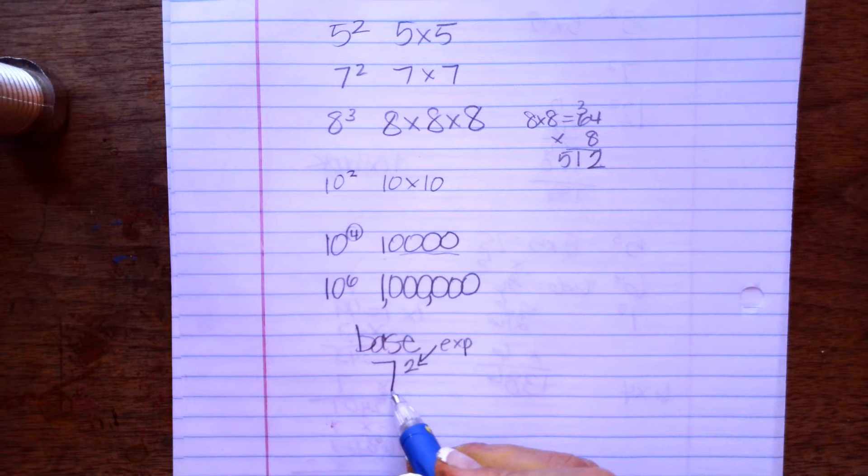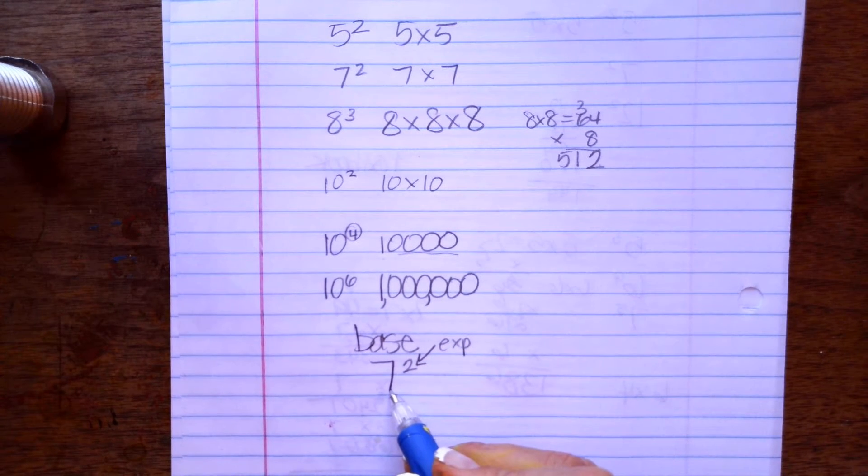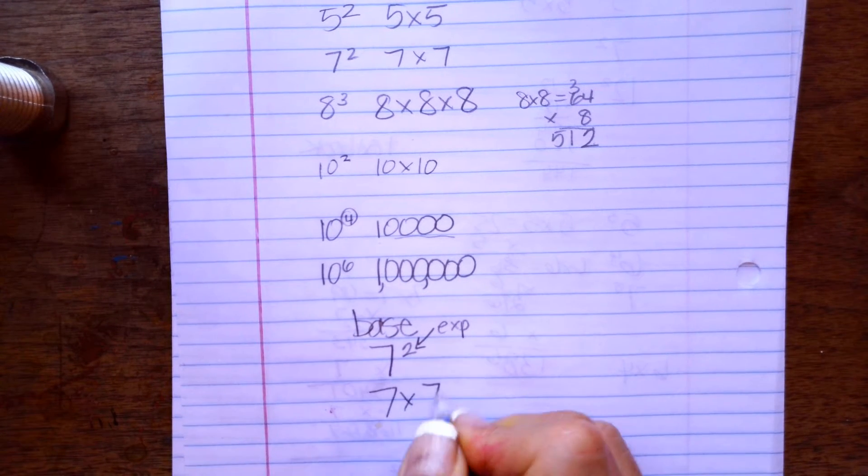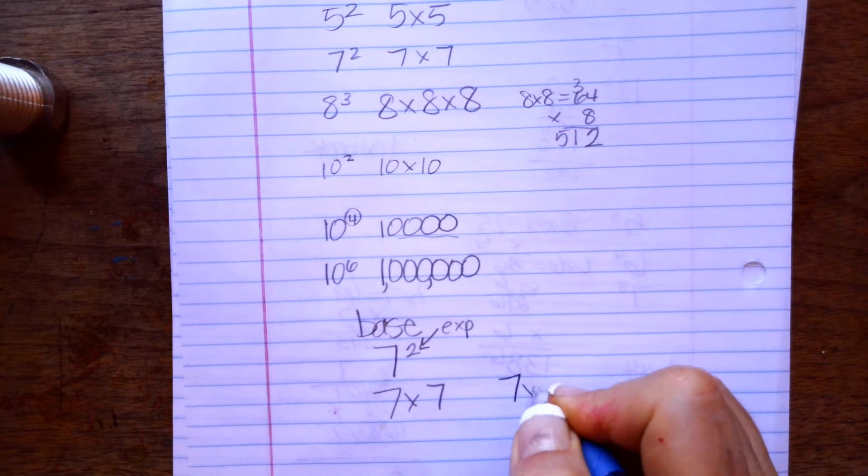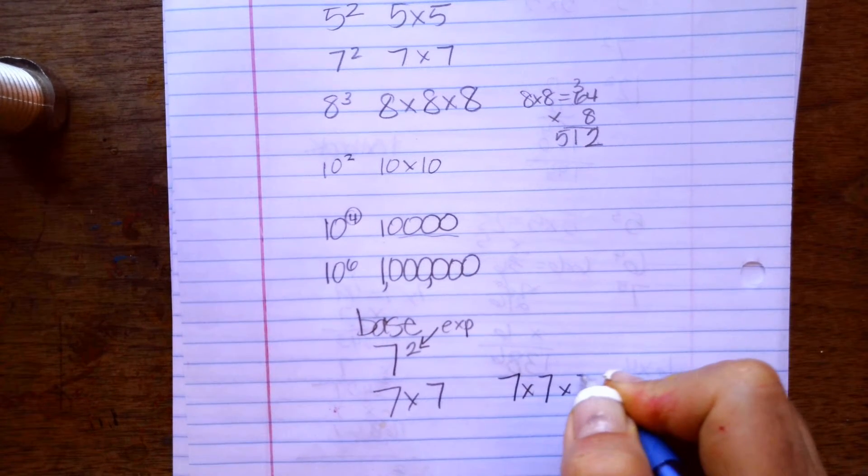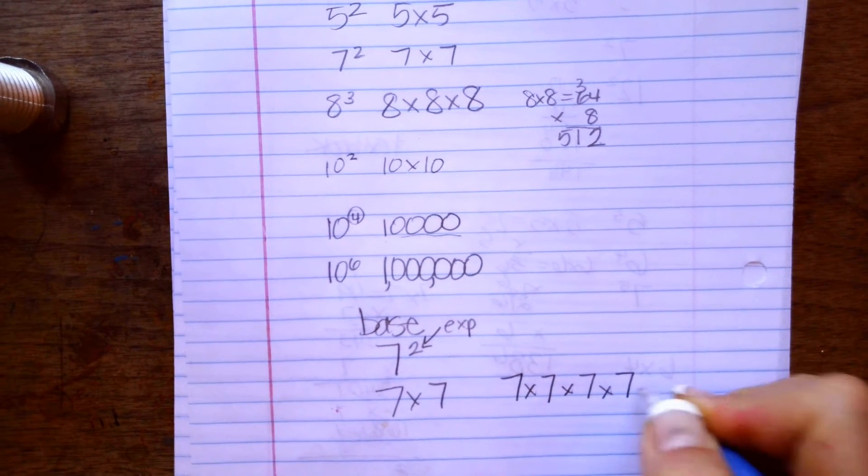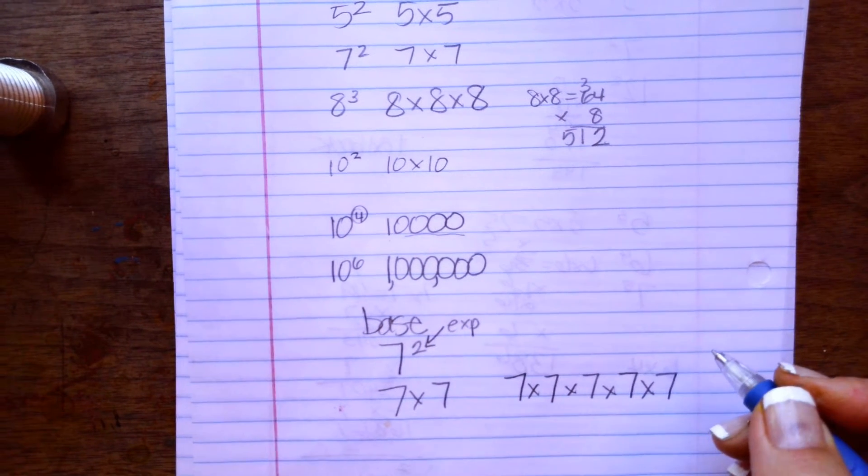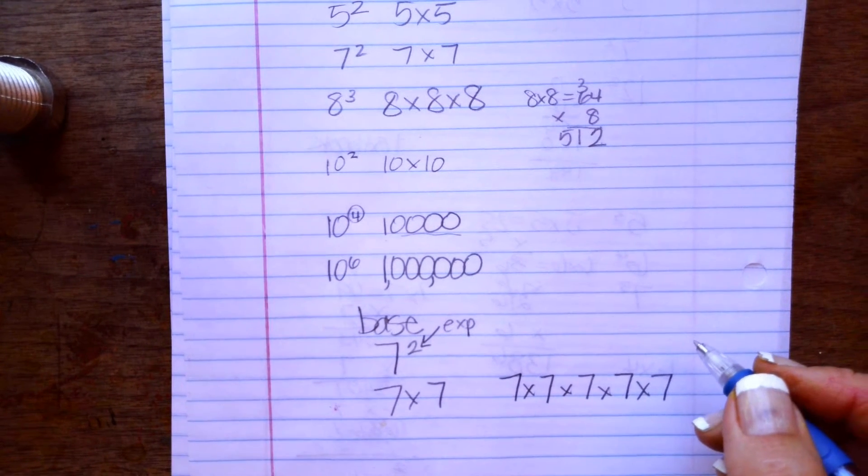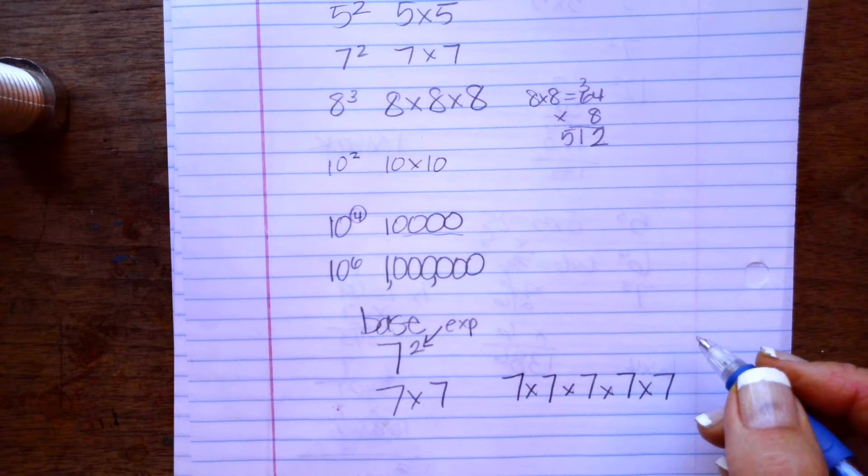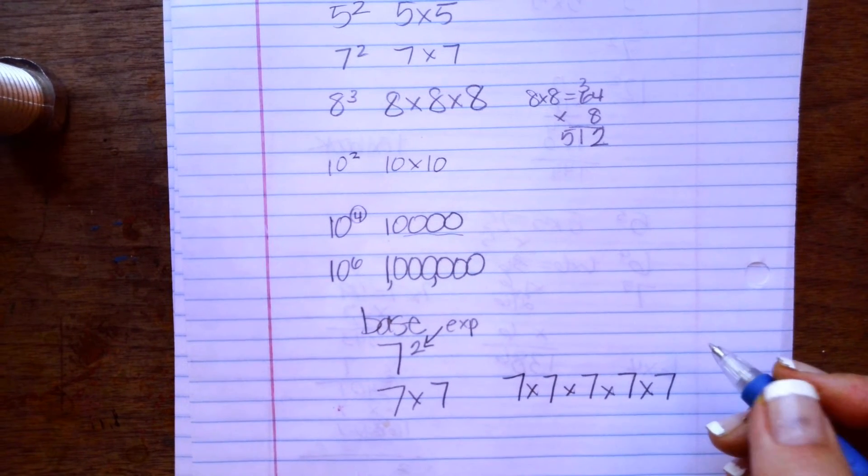So if the exponent is 2, then you would do 7 times 7. If the exponent is 5, you would do 7 times 7, then you'd multiply that by 7, then you'd multiply that by 7, then you'd multiply the next by 7. Do you have any questions about that, Lila? No.